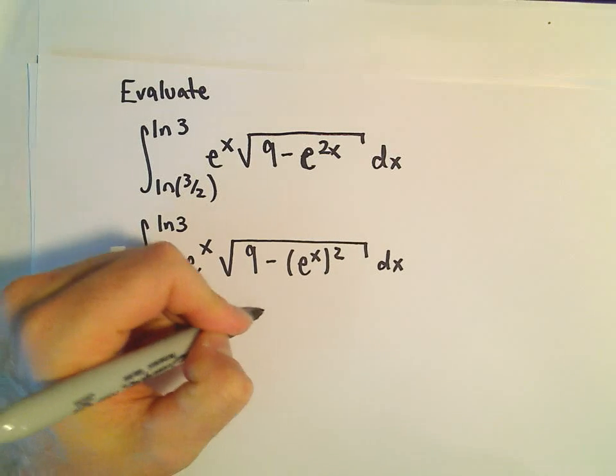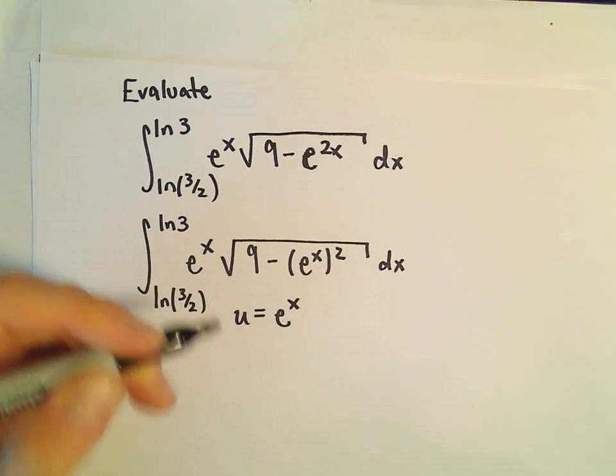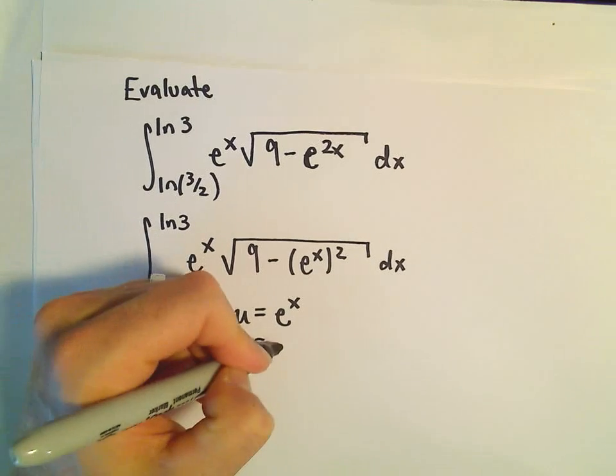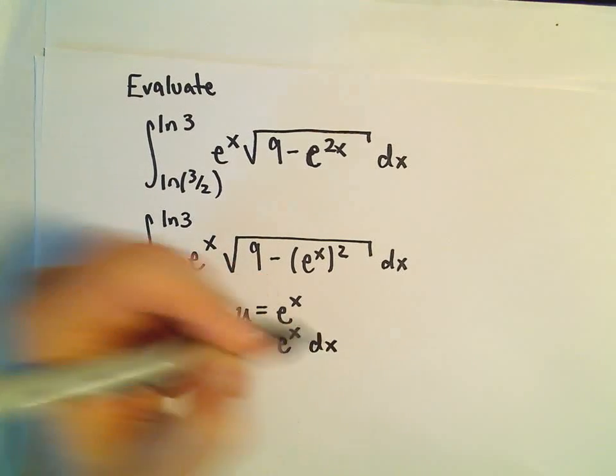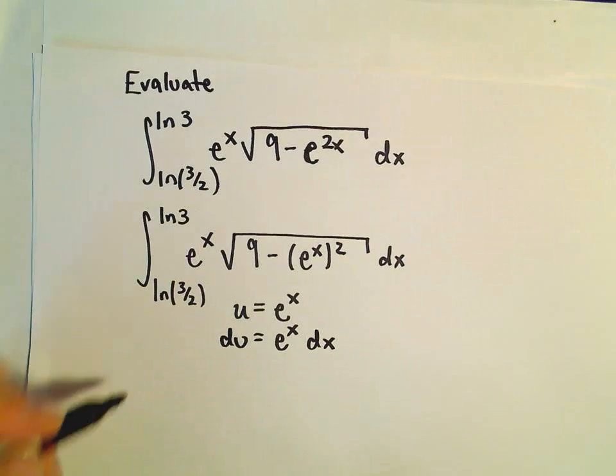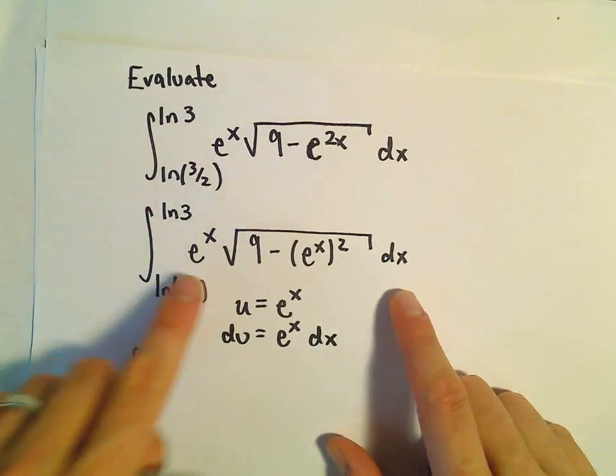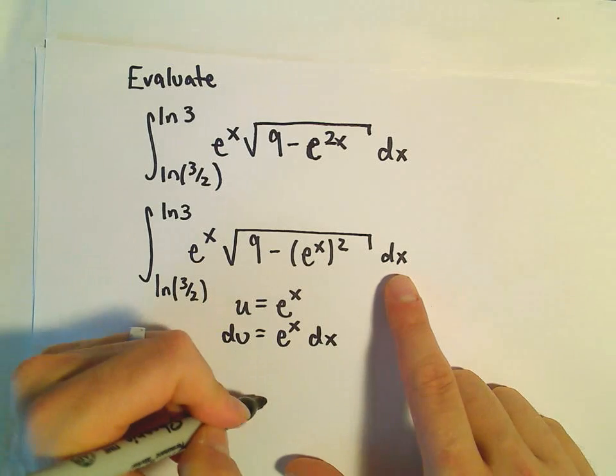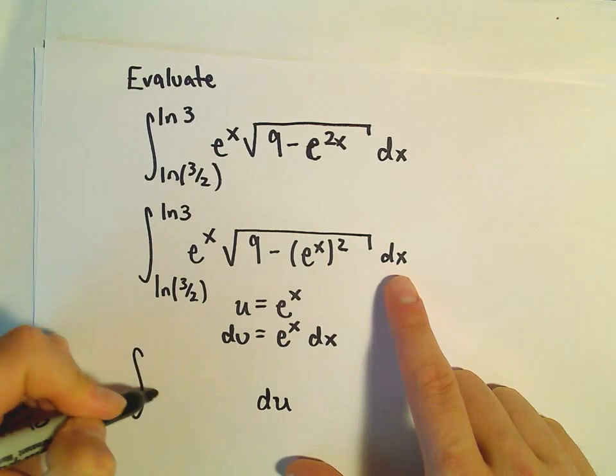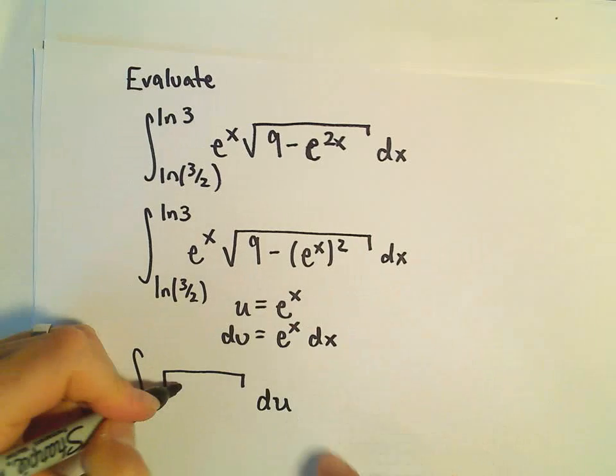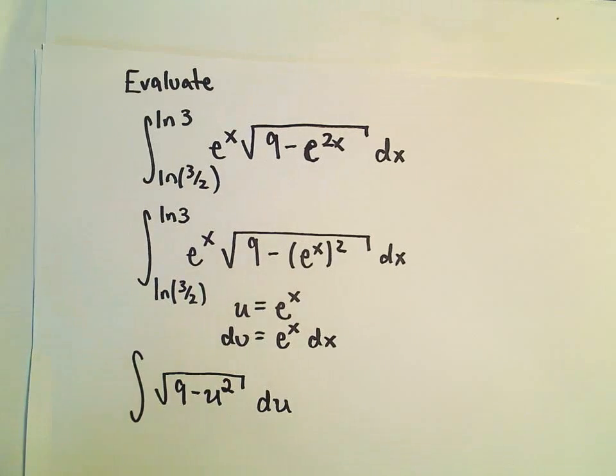First, I'm going to do just a plain old u substitution, and I'm going to let u equal e to the x, because du is going to be e to the x dx, and that's going to help me replace a lot of stuff here. We'll have to change the limits of integration. The e to the x dx, that's going to become our du, and then underneath the radical we would have 9 minus u squared.